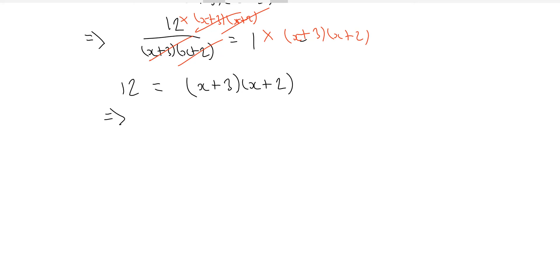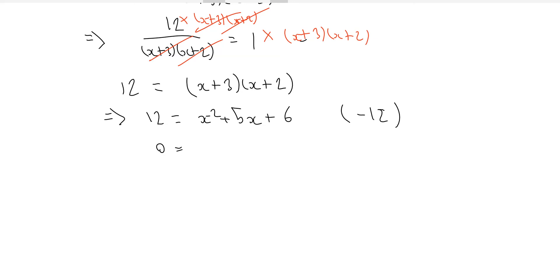The best thing to do now is to multiply out the brackets. We've got x squared plus 2x plus 3x plus 6, which gives x squared plus 5x plus 6. We can bring the 12 over to the other side by subtracting 12 from both sides. So 0 equals x squared plus 5x plus 6 minus 12, which is x squared plus 5x minus 6. Now we can factorise this equation.